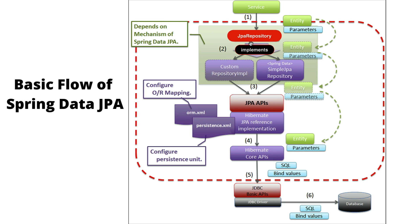The second step: JPA Repository is just an interface, and there should be an implementation for it. Spring Data JPA provides the SimpleJpaRepository class, which implements the JPA Repository interface as well as its methods. Spring Data JPA also provides flexibility to write your own custom repository implementation class. In this flow, we are using SimpleJpaRepository, which implements JPA Repository.